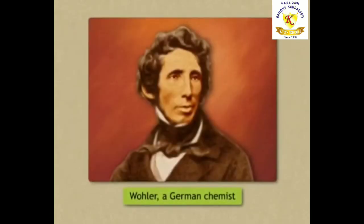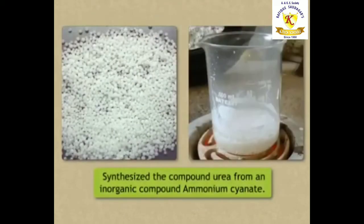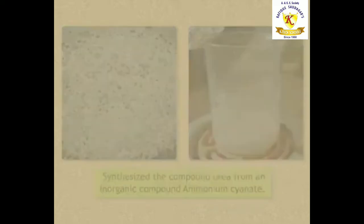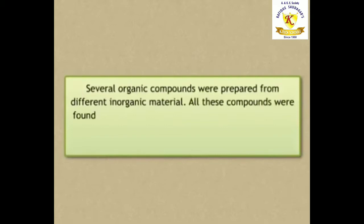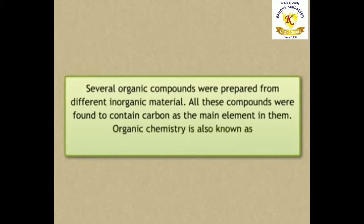Wohler, a German chemist, synthesized the compound urea from an inorganic compound, ammonium cyanate. Since then several organic compounds were prepared from different inorganic materials. All these compounds were found to contain carbon as the main element in them. Organic chemistry is also known as the chemistry of carbon compounds.